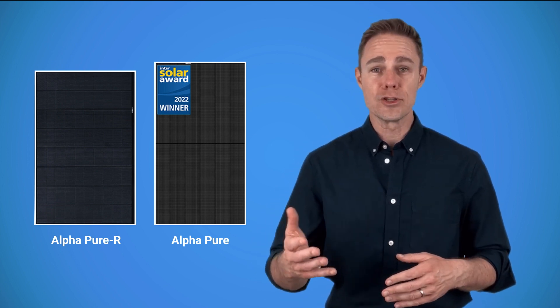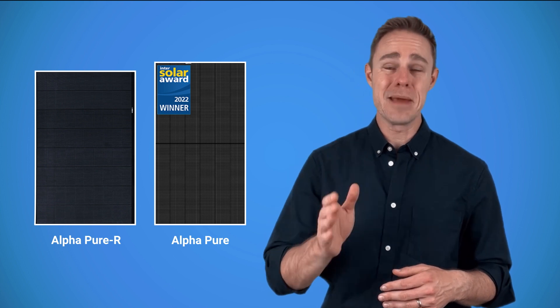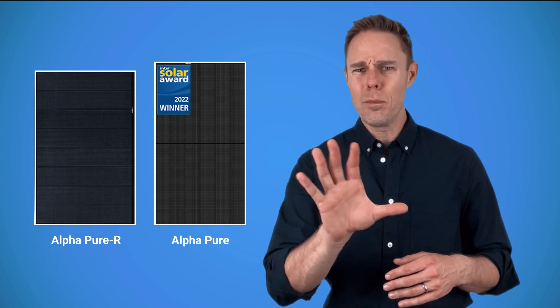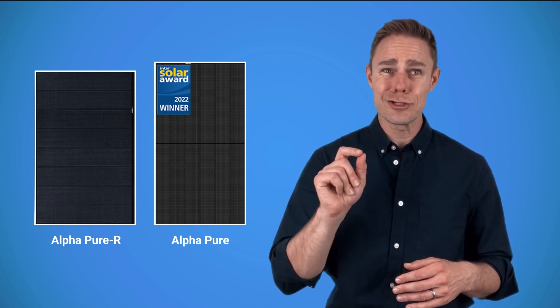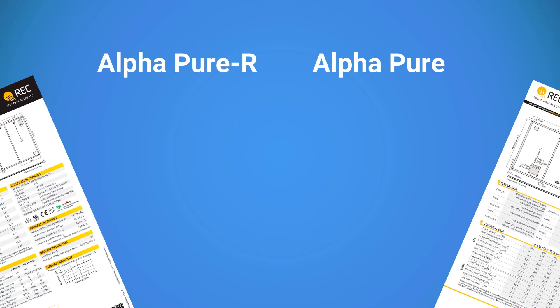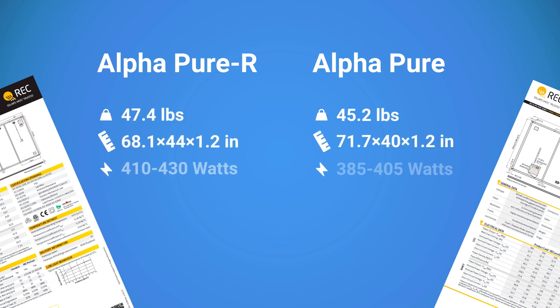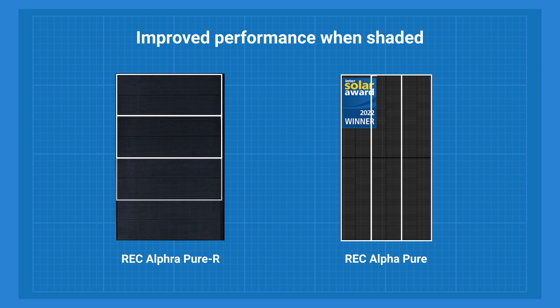First, both Alpha models look amazing. I mean, they've got that all-black polished design that looks super fancy. Looking at the data sheet, Pure-R is built a bit differently than the standard Pure model. It's heavier, wider, and one panel provides from 400 to 430 watts, so it's a good choice for a home or small commercial system.